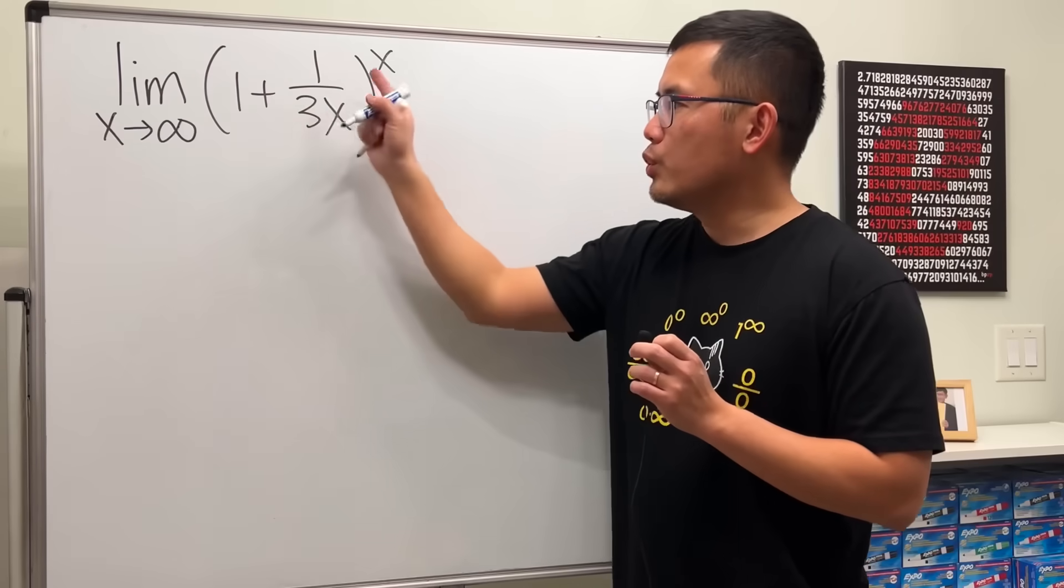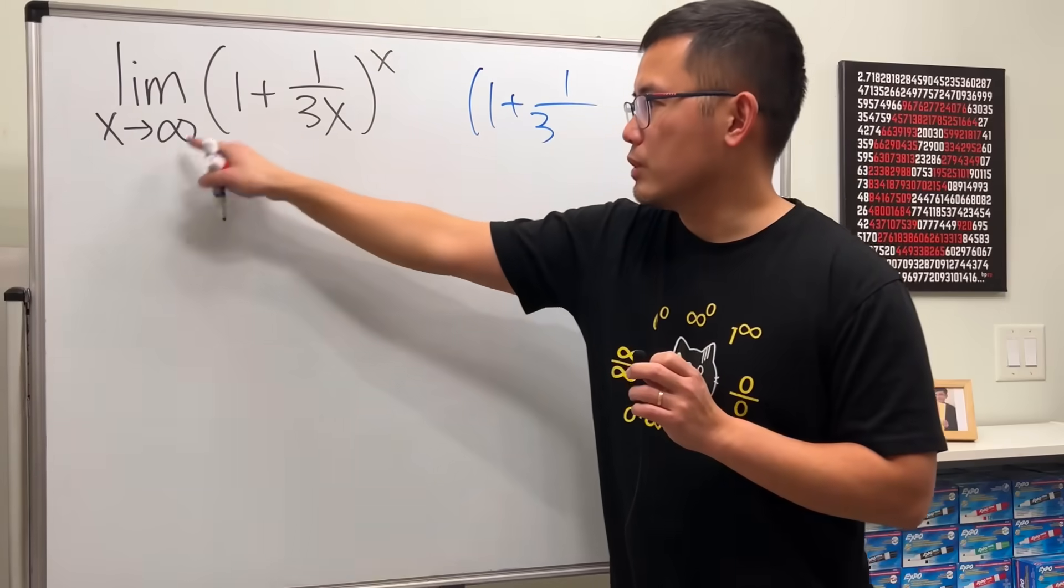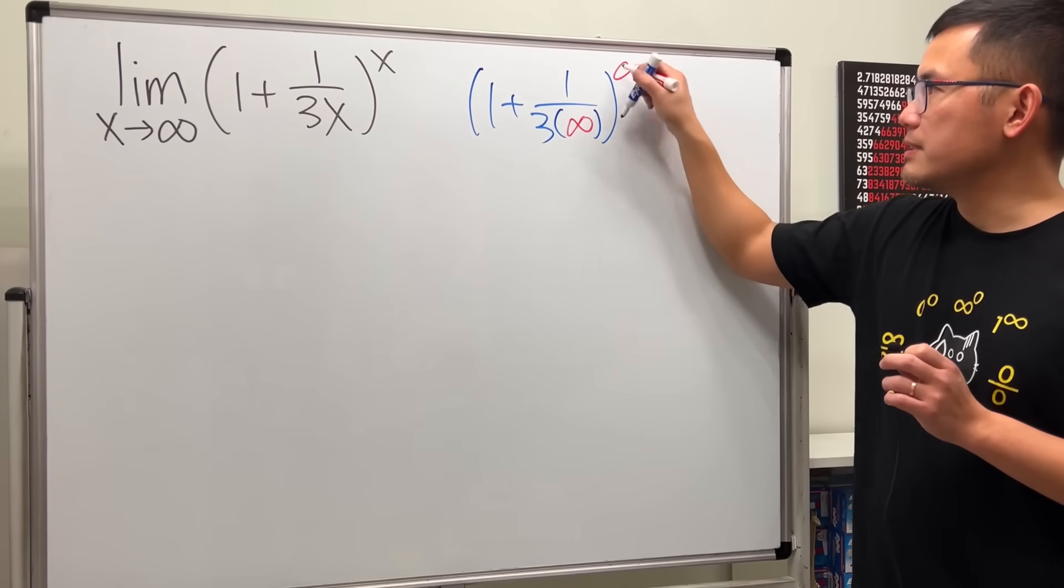Here we have the limit as x approaches infinity of 1 plus 1 over 3x raised to the x power. So let's just try to plug in infinity into all the x's and see what happens.